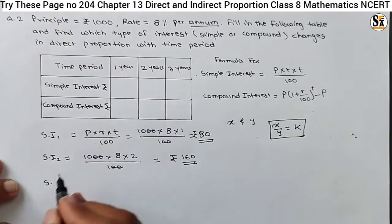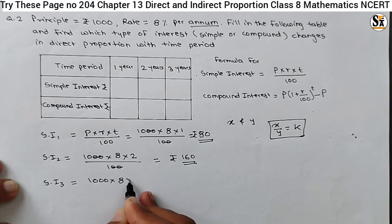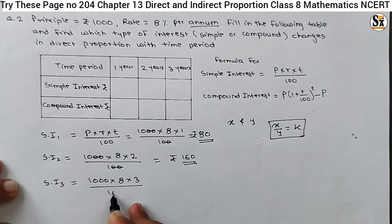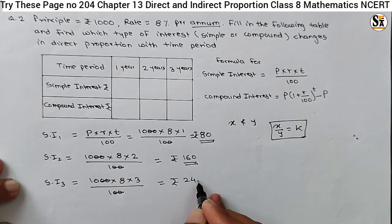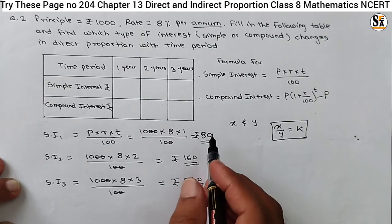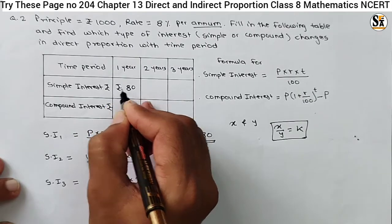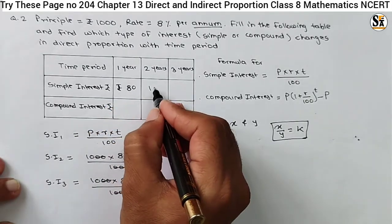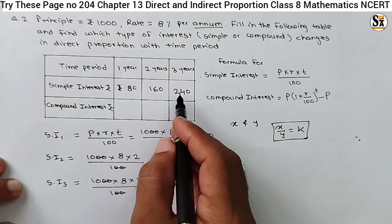For the period three years, SI3 = 1000 × 8 × 3 / 100. The zeros cancel: 8 × 3 = 24, 24 × 10 = Rs 240. So we are getting simple interest for these different periods: Rs 80, Rs 160, and Rs 240 for one, two, and three year periods respectively.